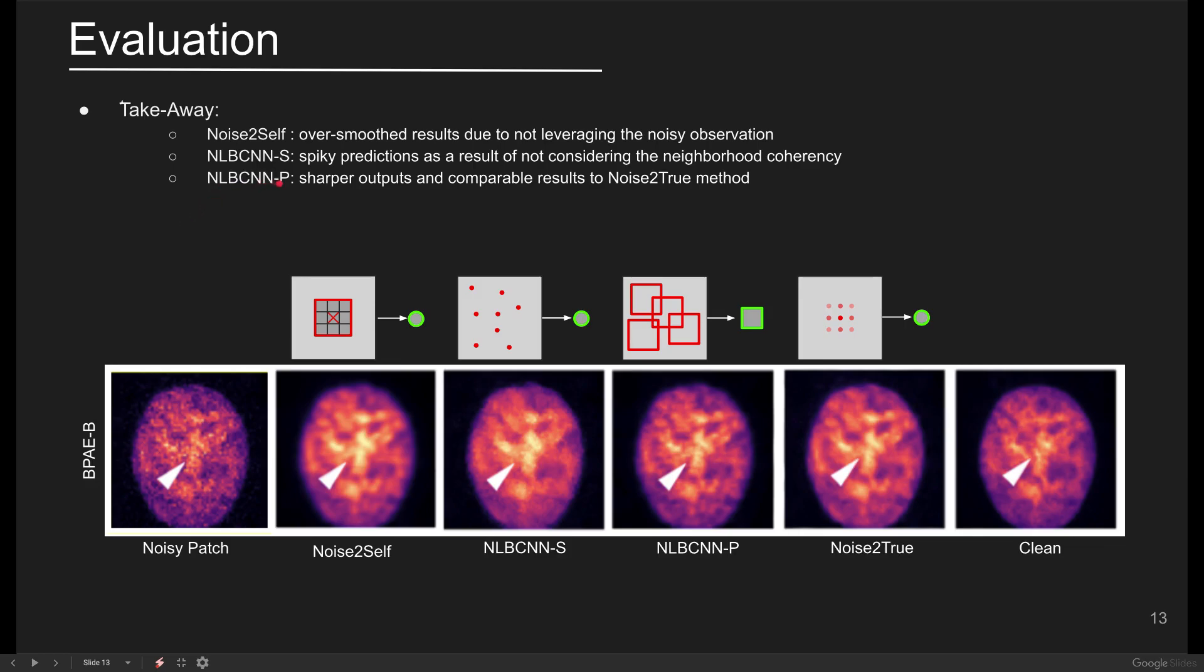NLBCNNP is the second variant of our proposed method, where patch size is set to 5. Noise-to-self approach results in over-smooth reconstructions of the regions with rich textures, for example in this region.